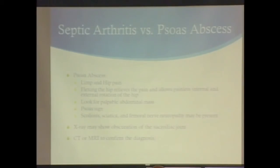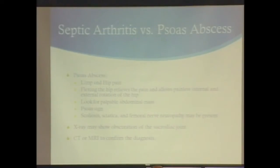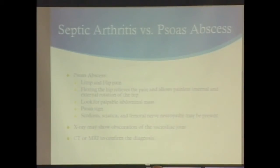Another thing to consider — not very common — is a psoas abscess. That presents with limp and hip pain, but flexing the hip relieves the pain, and you can internally and externally rotate without it hurting. You can feel for a palpable abdominal mass. The psoas sign is positive when you passively extend the hip, stretching the iliopsoas and causing pain. Because of proximity to nerves, there could be sciatic or femoral nerve symptoms. CT or MRI confirms the diagnosis; CT or ultrasound-guided drainage is typically the treatment.